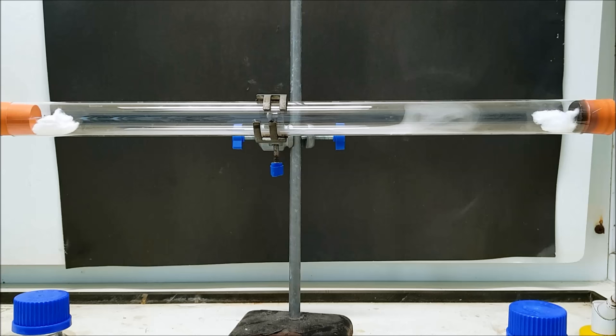What is it? How do you explain the formation of the white solid? How do you explain where it forms?